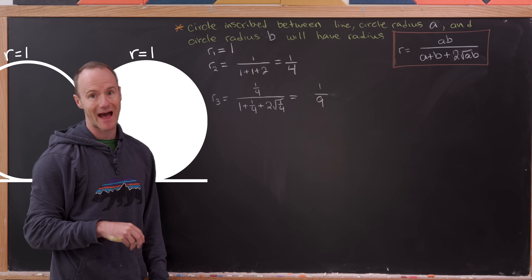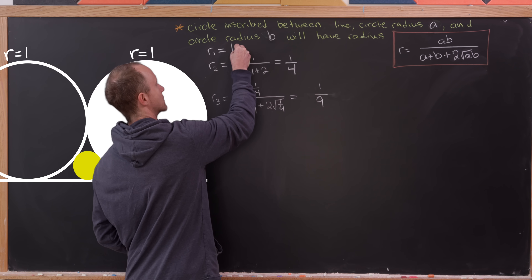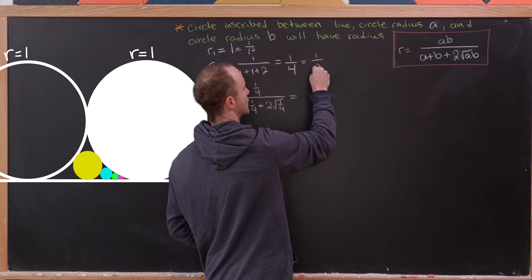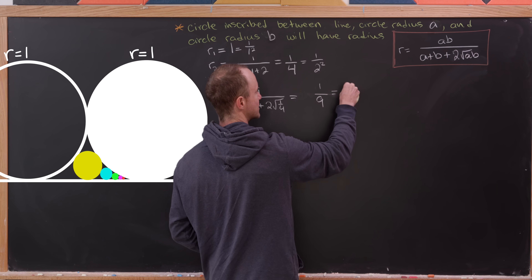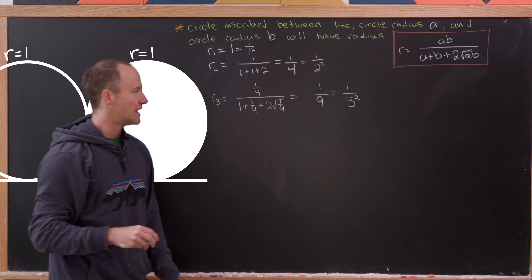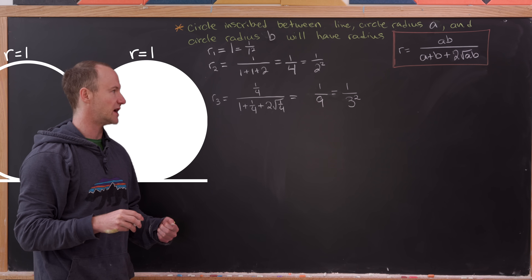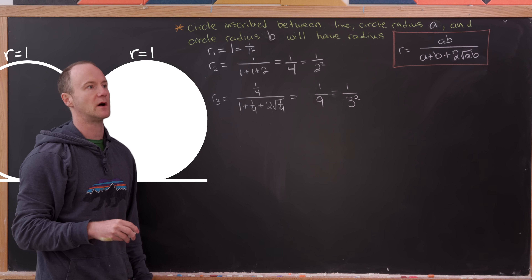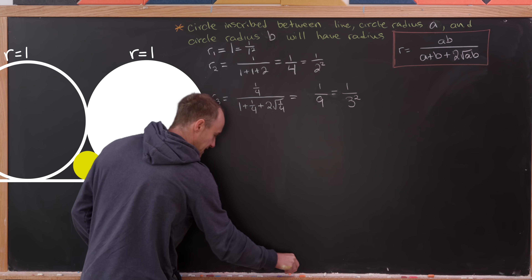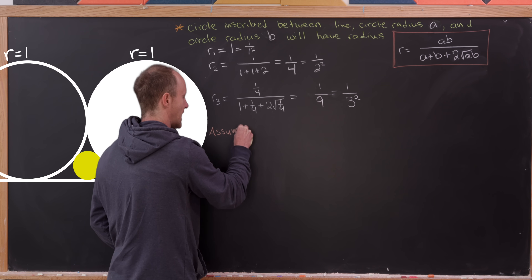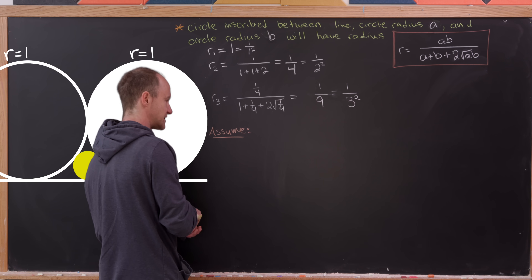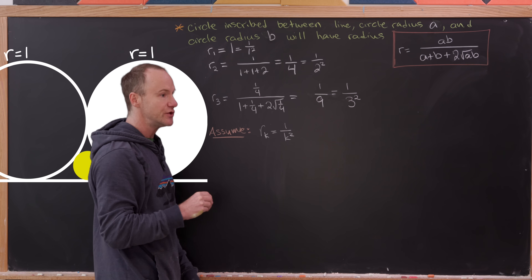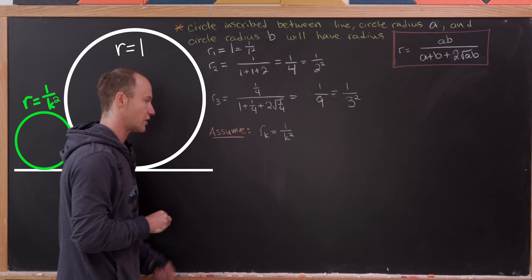We can now see a pattern: the first circle has radius 1 = 1/1², the second has radius 1/4 = 1/2², and the third has radius 1/9 = 1/3². We'll prove by mathematical induction that the nth circle has radius 1/n². We've checked the base case, and now we assume the kth circle has radius 1/k² and show the (k+1)th circle has radius 1/(k+1)².